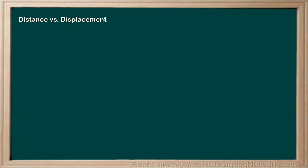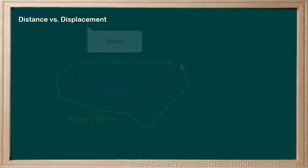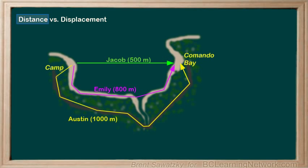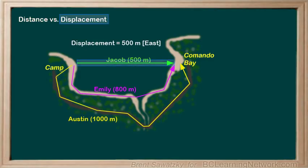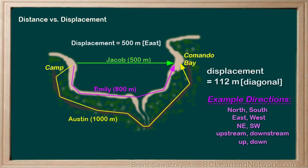In this tutorial, we looked at a couple of examples to better understand the difference between distance, a scalar quantity, and displacement, a vector quantity. We saw that distance includes all the steps involved in getting to another location, while displacement is just the most direct route there — from the beginning to the end, or the difference in position from the beginning to the end. We also talked about the various ways that direction can be described when dealing with a vector quantity like displacement.